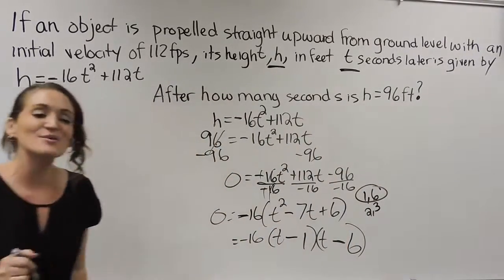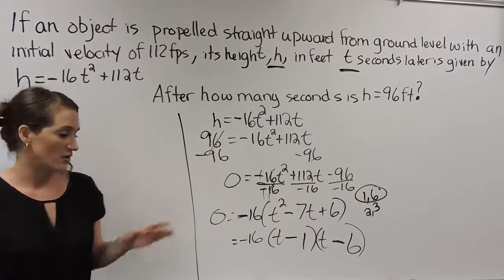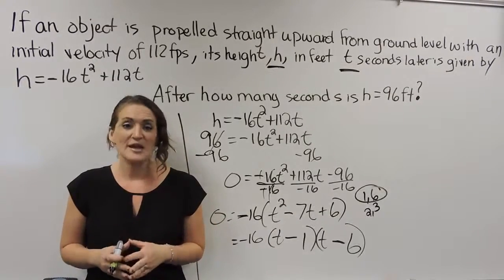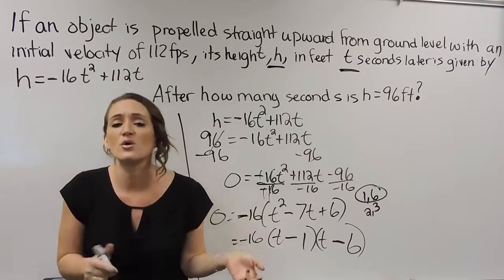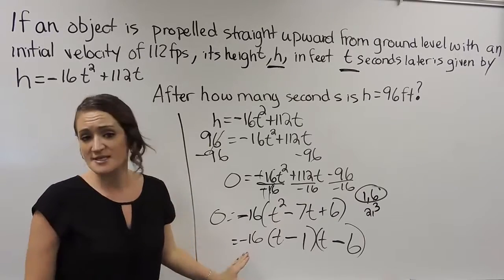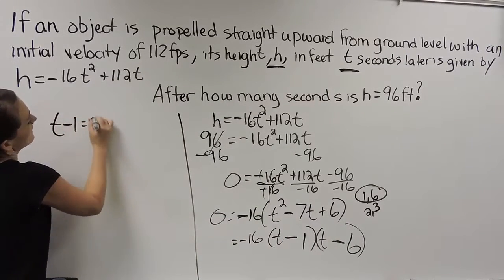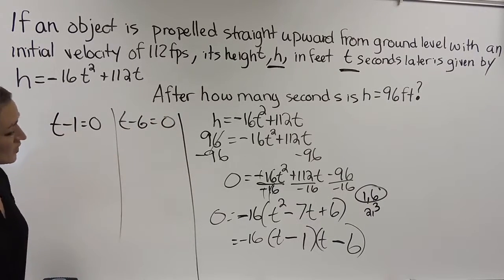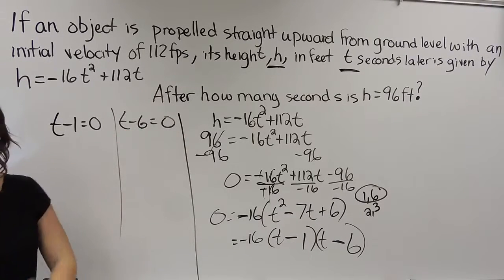Now at this point here, now is where we can actually finally do some solving and actually figure out what our solutions are going to be here. Now that we have it completely factored, what we do is we're going to use the zero factor property that's going to let us know that, hey, we can take these factors and split them up and set them each equal to zero so we can solve. So you only split up factors that have variables in them. So the negative 16, we don't need to do anything with that. What we're going to do is we're going to take these two factors here and we're going to set them each equal to zero and we're going to solve both of them.